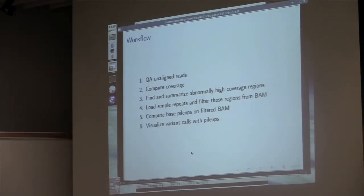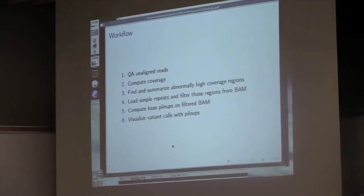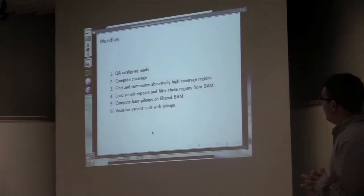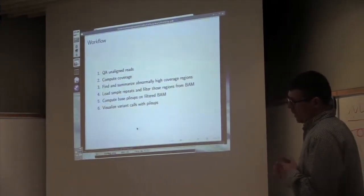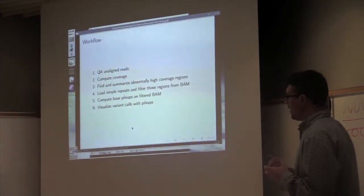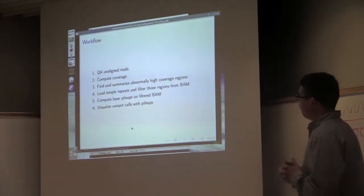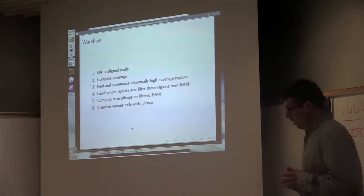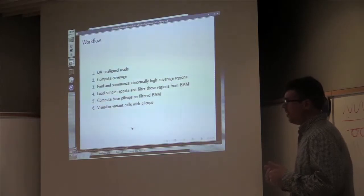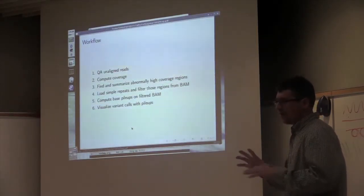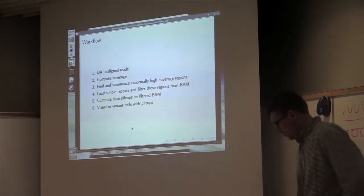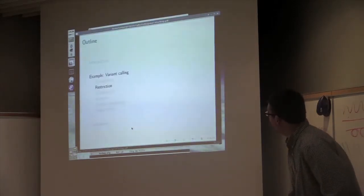The workflow here is pretty simple. We're just going to do a little basic QA. We're going to calculate the coverage. There's some reason to believe that if you have high outlier coverage regions in your data, there's probably some misalignment going on. You might want to take those into account. A lot of times you might expect those to be coincident with simple repeats, satellite repeats. So we'll filter those out from the BAM, and then we'll compute some pileups from the filtered BAM and visualize the variant calls from GATK with those pileups. It's really just to show off these techniques to scale.